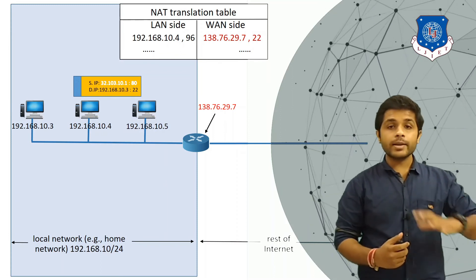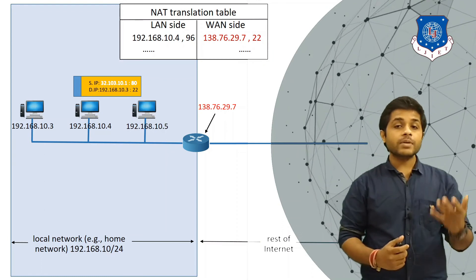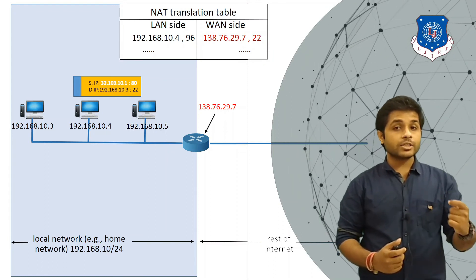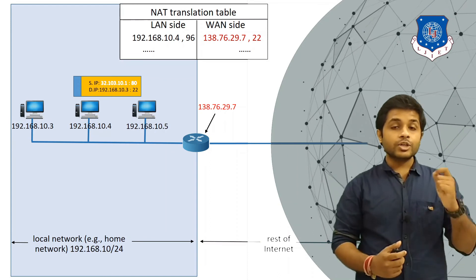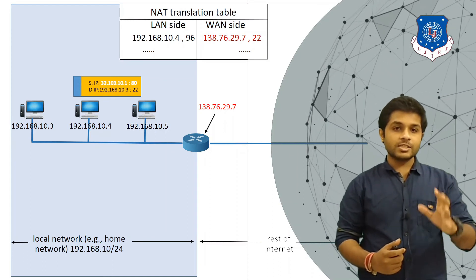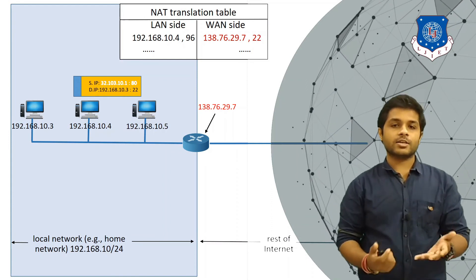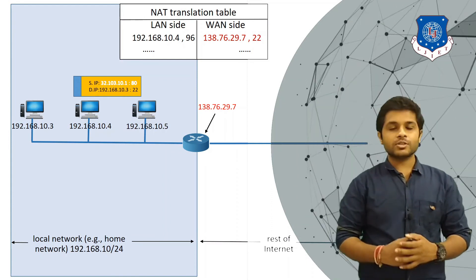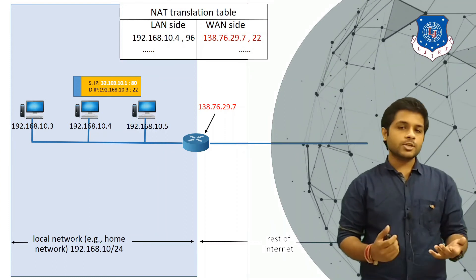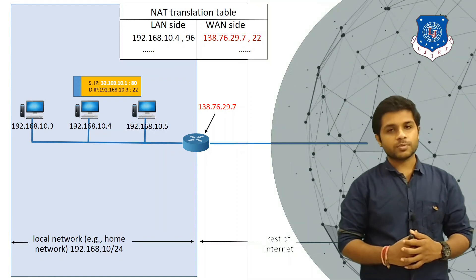So if we have created a local area network where every device has a private IP address, we can still connect to the internet using only one public IP address. That is the biggest advantage of Network Address Translation. This is how NAT works. If you have any doubts, you can ask in the comment section. Thank you so much.